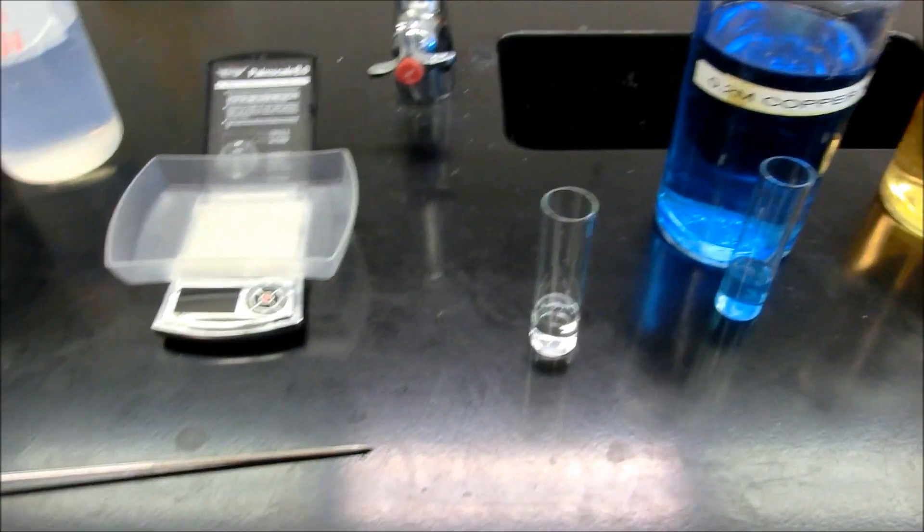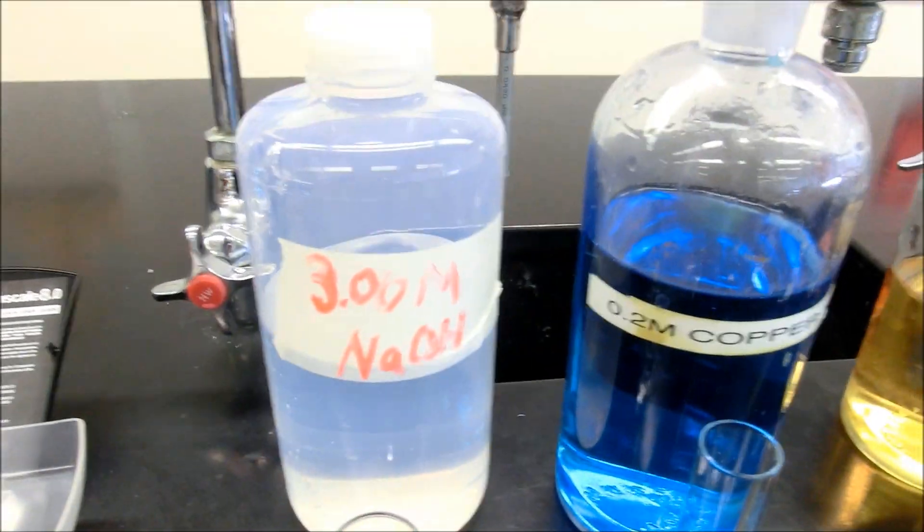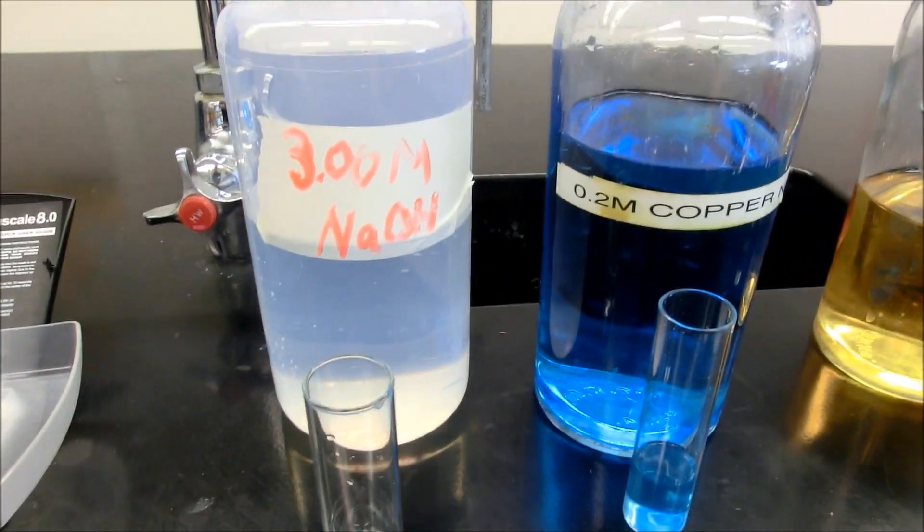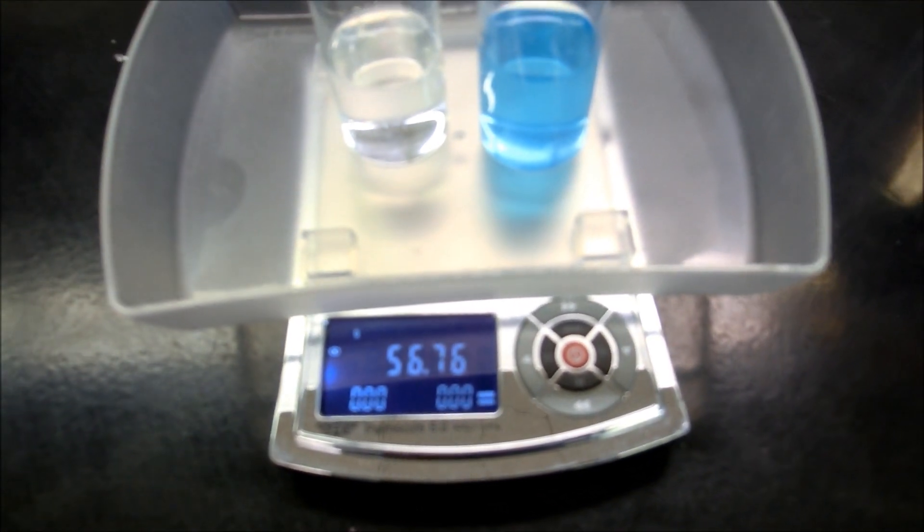Alright, for reaction number two, we have copper nitrate and we again are using sodium hydroxide. So let's go ahead and weigh those before we start. And the weight of those two together is 56.76 grams.